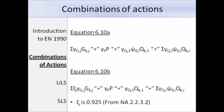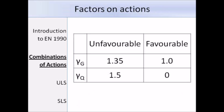The second option uses equations 6.10a and 6.10b, and we need to take the least favourable of these two. Equation 6.10a is similar to 6.10 except that we have an extra combination factor ψ0 applied to the leading variable action as well. Equation 6.10b is the same as 6.10 except that we have a reduction factor ξ, whose value from the National Annex is 0.925, applied to the permanent action term. For unfavourable actions, γG is 1.35 and γQ is 1.5. For favourable actions, the factor for permanent actions is 1.0 and for variable actions is 0.